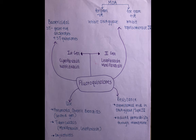Their spectrum involves gram-positive bacteria, anaerobes, and bacteria which are sensitive to quinolones. There are two groups of fluoroquinolones: first generation and second generation. First generation includes ciprofloxacin and norfloxacin. Second generation includes levofloxacin and moxifloxacin.